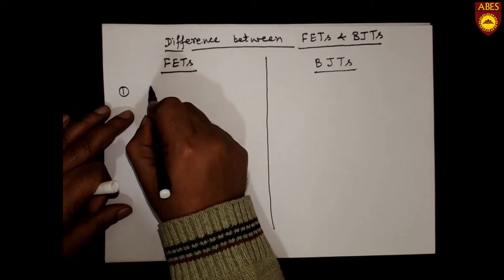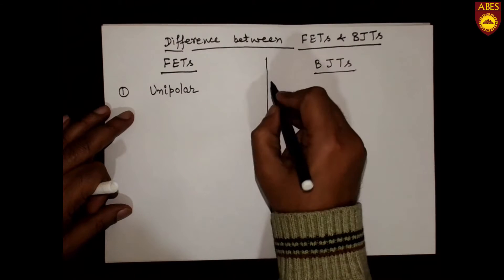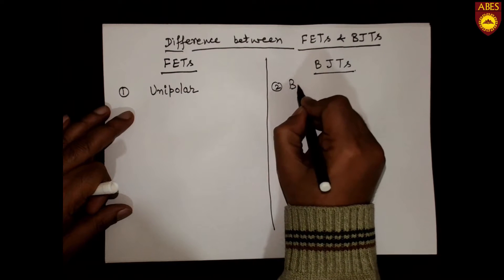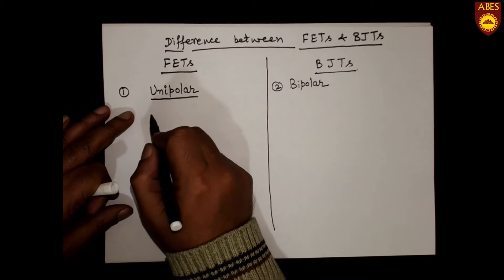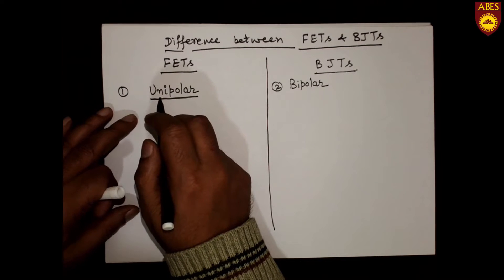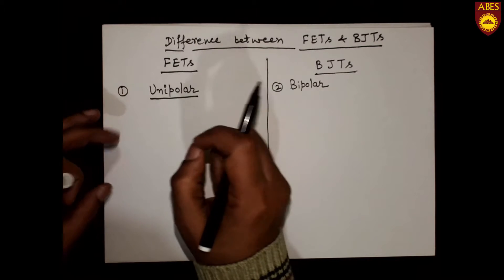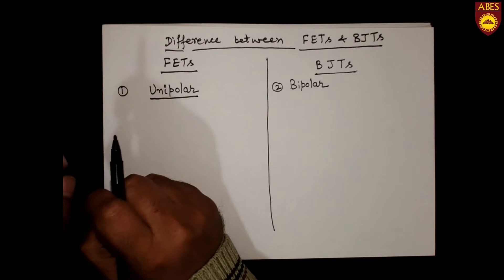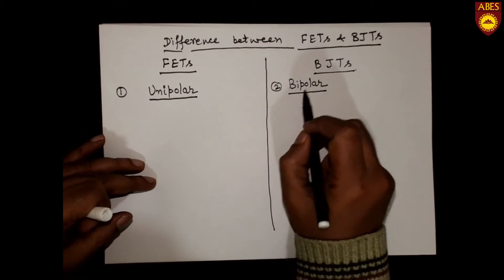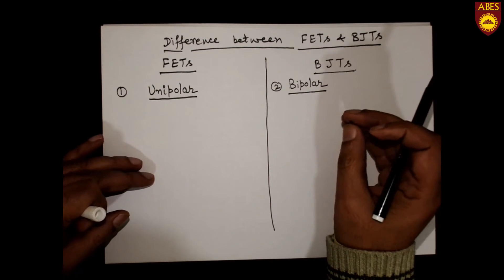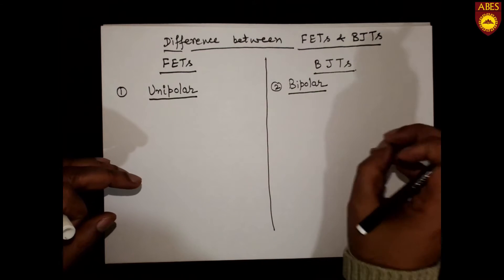First difference: FETs are unipolar devices, while BJTs are bipolar devices. Unipolar means the operation of the device depends only on one type of charge carrier, whether it is an electron or a hole. Bipolar means both types of charge carriers — electrons as well as holes — participate in the operation.